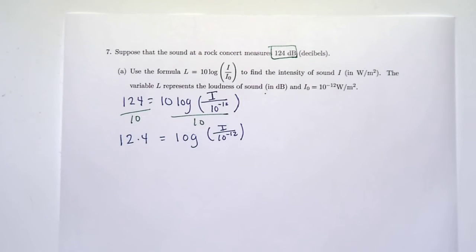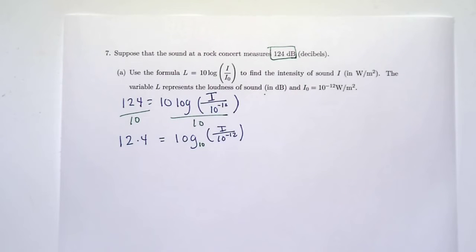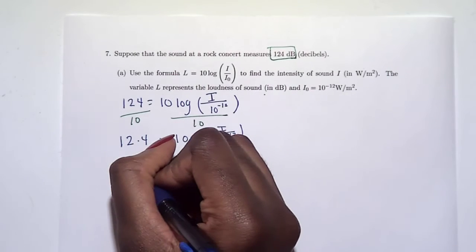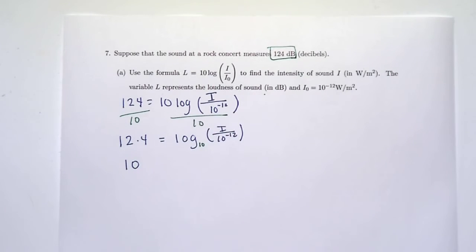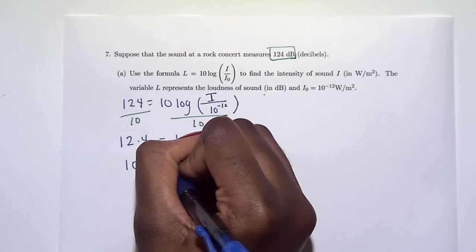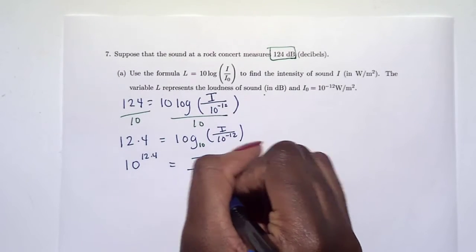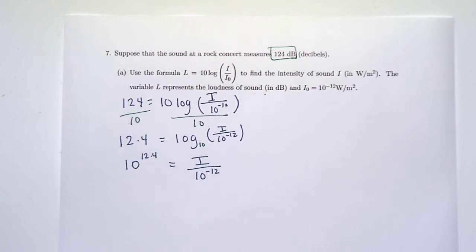When we have exponentials, we got to use logs. Remember, whenever log's by itself, the base is 10. So can we rewrite this in exponential form? The answer should be yes. So 10 to the 12.4 should be I divided by 10 to the negative 12. We're trying to solve for I. We can do that.